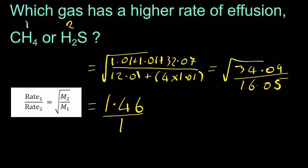So the rate of one is 1.46 times the rate of two. What do we mean by rate? Well, I don't think they're going to ask too much about that. But for every one meter hydrogen sulfide goes, methane would go 1.46 meters in the same time.